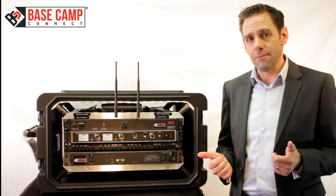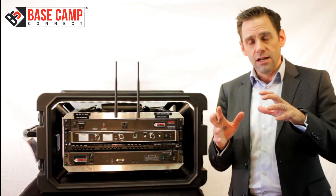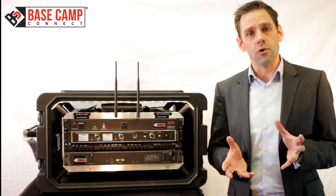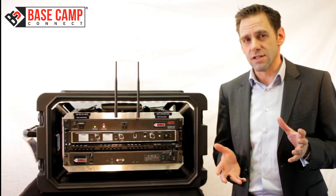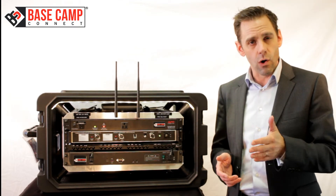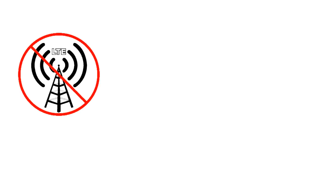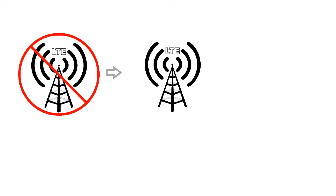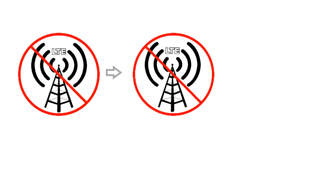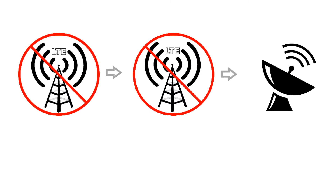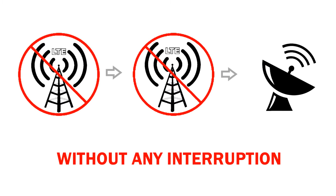One interesting thing with Basecamp is that if you have three networks available, it will cascade those networks and make sure that you're always connected. For example, if you have one of the LTE networks that fail, it will automatically defer to the second one. And if that one fails, it would automatically defer to the satellite network to make sure that all the users can still do their work without any interruption.